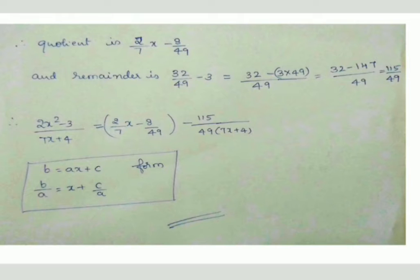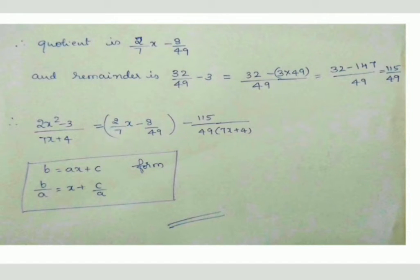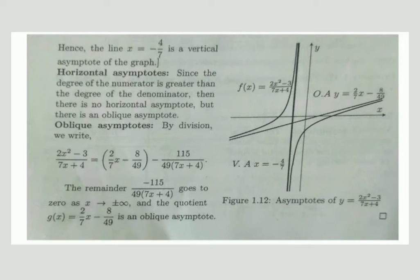Taking the LCM of 49 and 1, we obtain the remainder as -115/49. So we can write (2x² - 3)/(7x + 4) as the quotient (2x/7 - 8/49) plus the remainder -115/49 divided by (7x + 4). This remainder tends to 0 as x tends to ±∞.